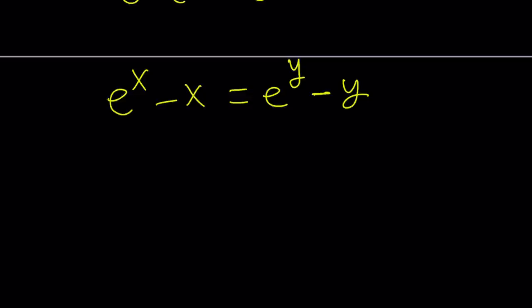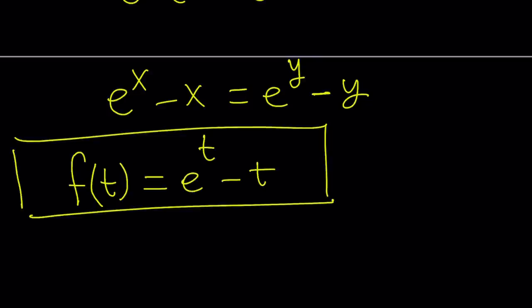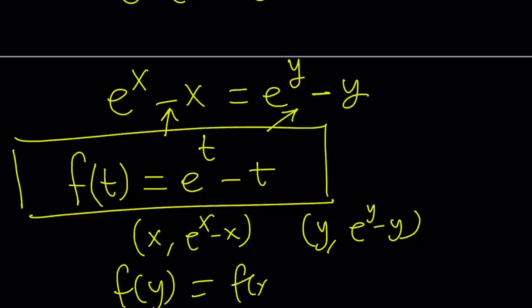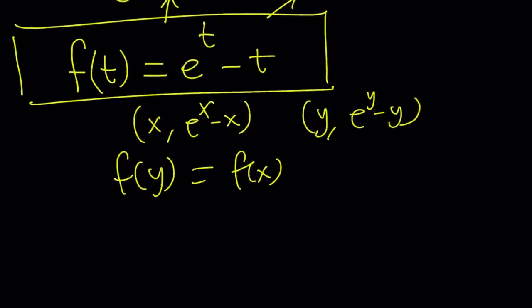So we said that x equals y satisfies this equation. But let's go ahead and take a look at this function. F of t equals e to the t minus t. So if I define my function using a different variable, then I can look at these two as two points on the function. I'm evaluating this function at two different points, f of x and f of y. And I'm getting the following: f of y is the same as f of x. And we're saying that this implies y equals x. But is that the only solution?